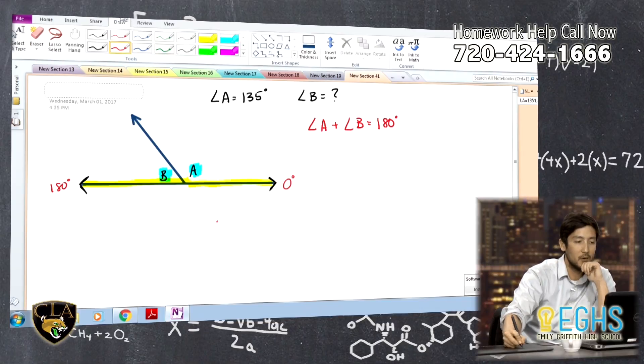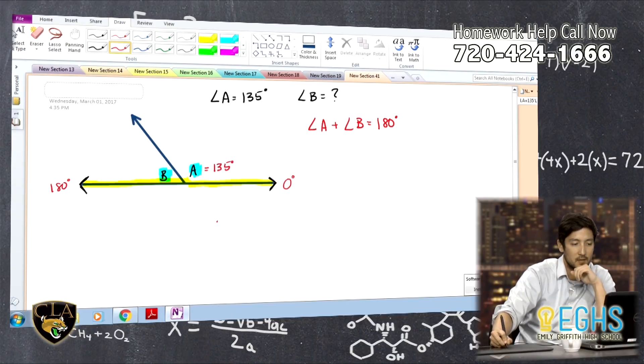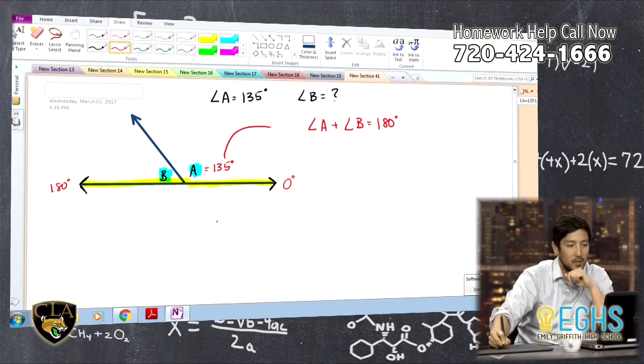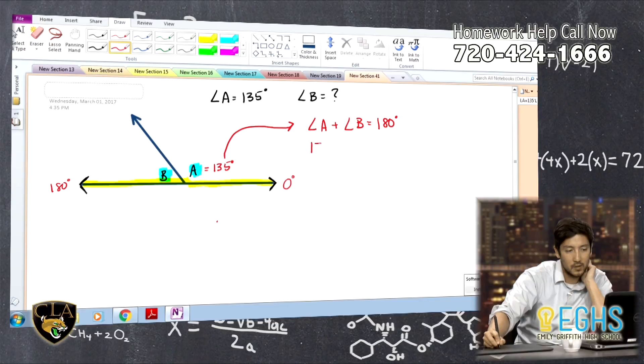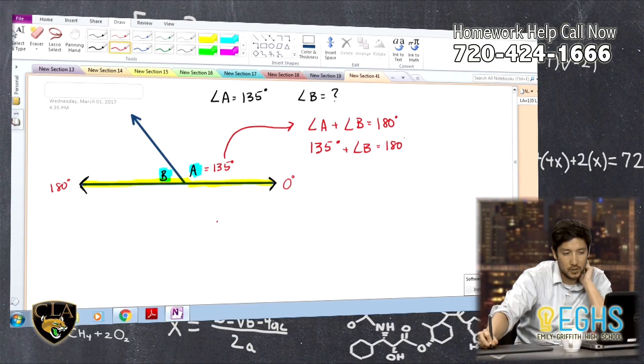So then we come back and we say, okay, what information did I have? Well, it was given to us that angle A is 135 degrees. We don't know angle B. So all I'm going to do is take this measurement and I'm going to replace it. Because we know these are the same, we can substitute. And I'm going to say 135 degrees plus angle B equals 180 degrees.